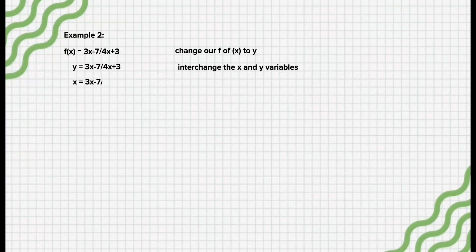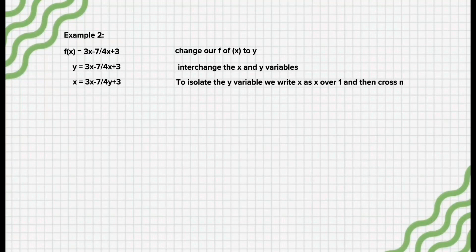Second, we interchange the x and y variables. So, x = (3y - 7)/(4y + 3). To isolate the y variable, we write x as x/1 and then cross multiply.